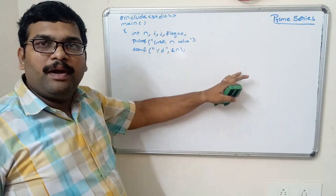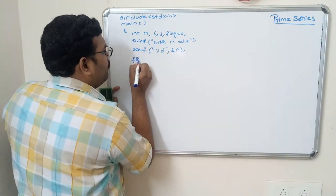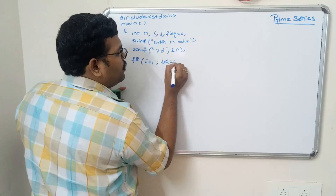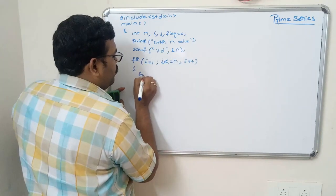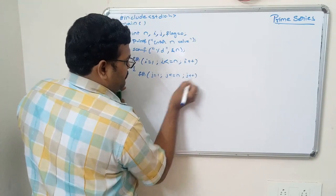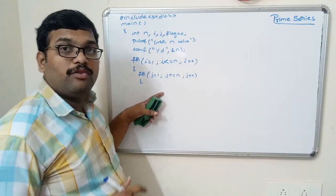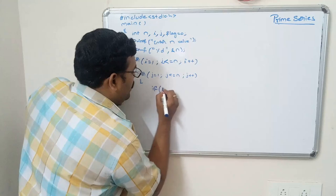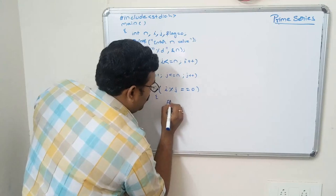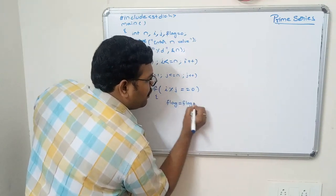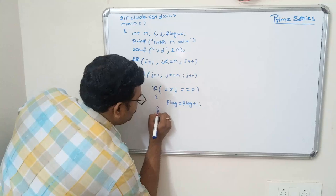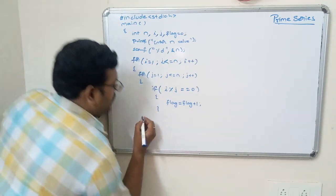After reading the n value, we write the outer loop: for i equals 1, i less than or equal to n, i plus plus. Inside, we write the inner loop: for j equals 1, j less than or equal to n, j plus plus. Inside the inner loop, we check the condition: if i mod j equals zero, we increment the flag using the increment operator.